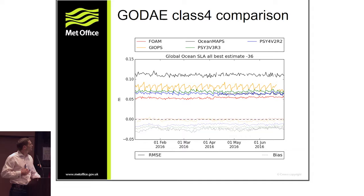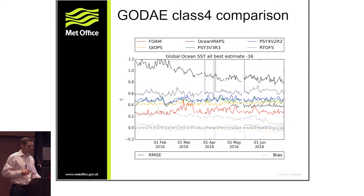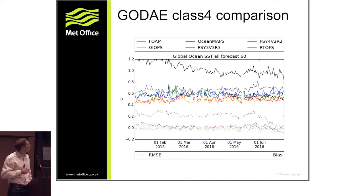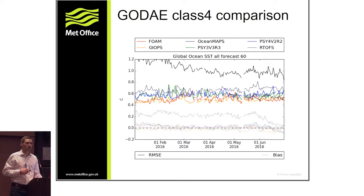Similarly for SST, FOAM is performing well against other models in the forecast. Unfortunately I don't have an equivalent plot showing the global coupled forecast, but broadly speaking it would be very similar to that red line. The quality of the forecast from the global coupled system is certainly up there with the other systems — this is a three-day forecast where the global coupled system performs comparably.